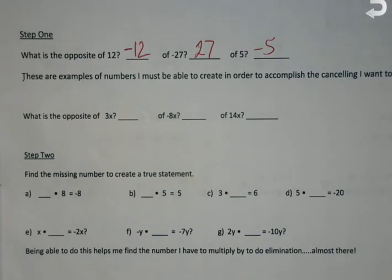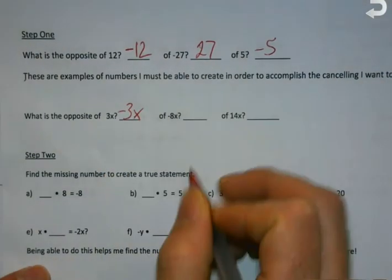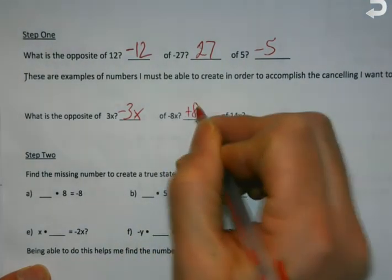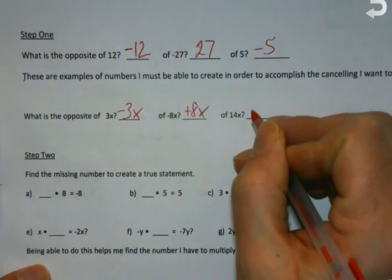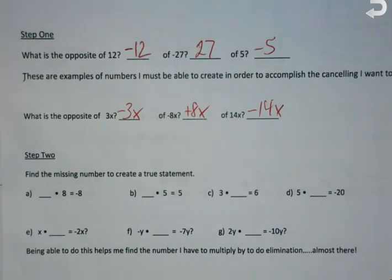What's the opposite of 3x? Negative 3x. What about the opposite of negative 8x? Positive or 8x. Yes. Or 14x? Negative 14x. This is what we actually are going to find when it's time to go and eliminate something.